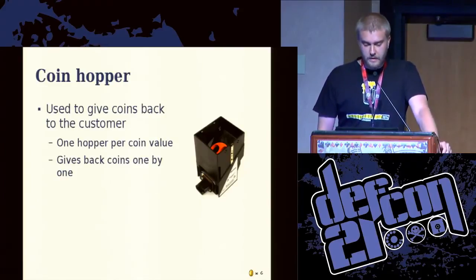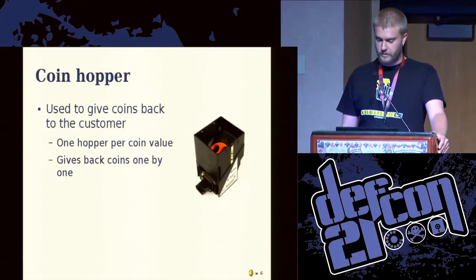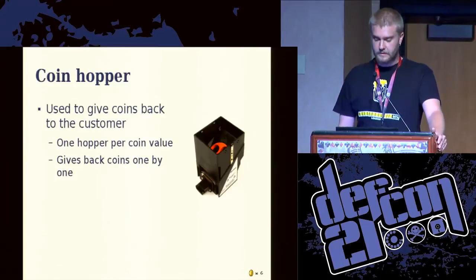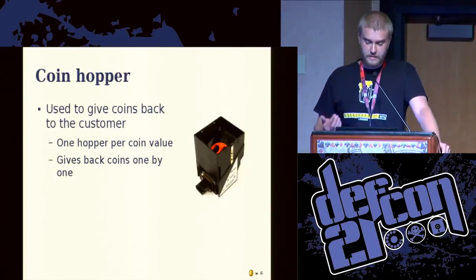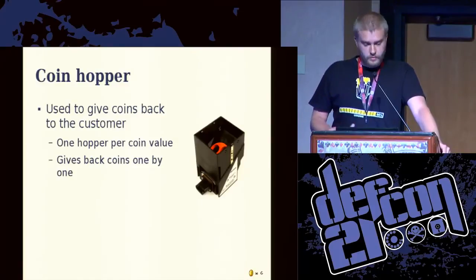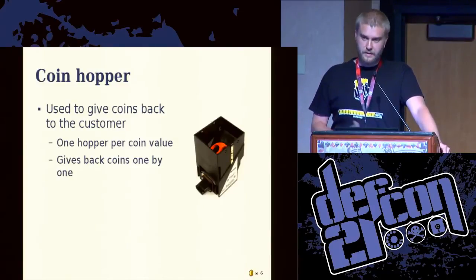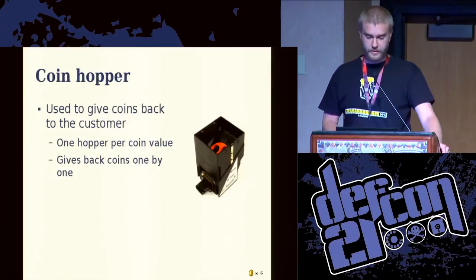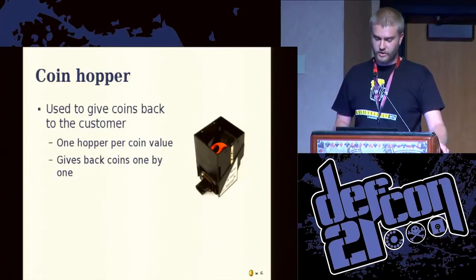Other devices are coin hoppers, which are used to give money back — so when you need to get the change. It's pretty much like a big tray that operates using some commands and gives you the money, coin by coin, back. So if you need to receive back one dollar and this tray contains quarters, the main board will send a command to release four coins so you can get your change back.